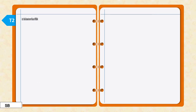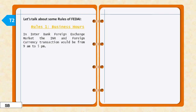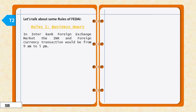Now let's talk about FEDI's rules. The first rule is about business hours. The foreign exchange market inter-bank business hours are from 9 o'clock to 5 o'clock. For customer business, the hours are from 9 o'clock to 4 o'clock.